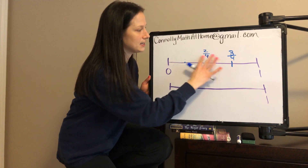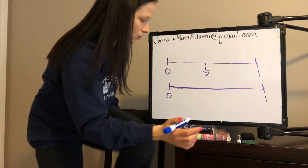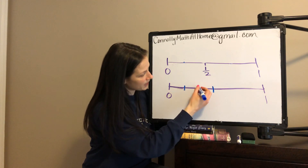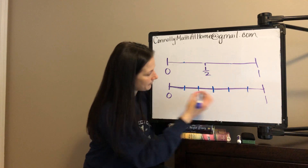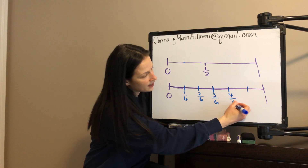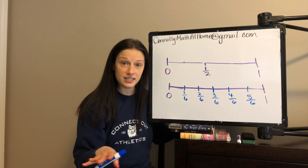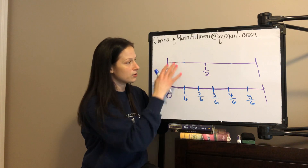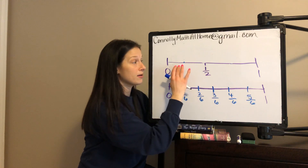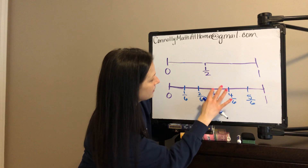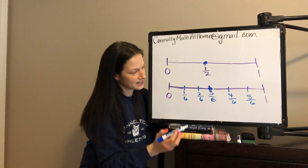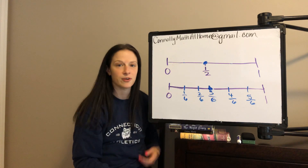Sometimes it's easier to see on a separate number line. So let me think about sixths — what's equivalent with sixths. If I split my number line into six equal parts: one sixth, two sixths, three sixths, four sixths, five sixths. The way to see this is that I have my number lines lined up — zero and zero, one and one. I've made six equal parts up here and two equal parts on the other. We see that one half and three sixths are the same distance from zero on the number line.